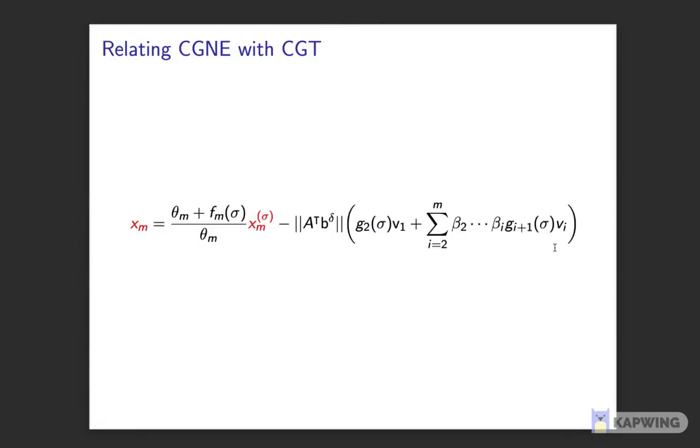It turns out that this invariance is all we need to come up with a concrete link between the iterates of the two methods. This equation is the culmination of the project. On the left, we have the Mth iterate of CGNE, and on the right, x_M sigma denotes the Mth iterate of CGT with parameter sigma.